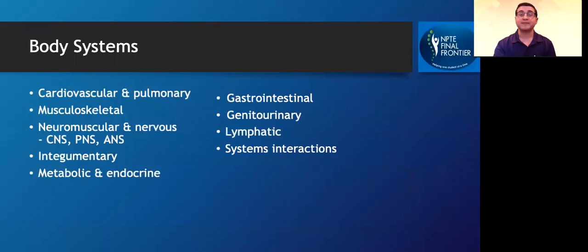On the NPTE, you're going to be questioned on body systems. So you'll have cardiovascular and pulmonary, musculoskeletal, neuromuscular and nervous, integumentary, metabolic and endocrine, gastrointestinal, genitourinary, lymphatic, and systems interactions.